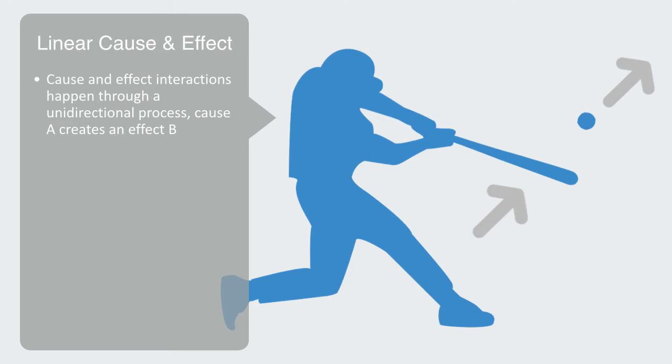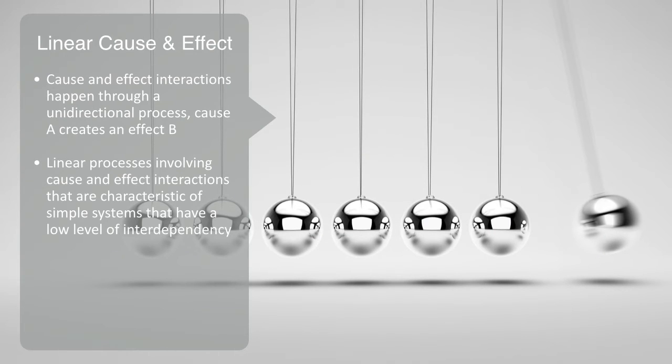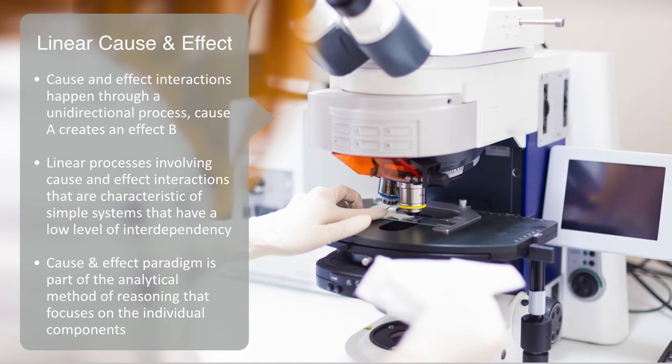These are linear processes involving cause and effect interactions that are characteristic of simple systems that have a low level of interdependency. We typically tend to think of things as chains of cause and effect and often ignore the time delays between them and how a change in one component will possibly feed back to affect another. This linear cause and effect paradigm is part of the analytical method of reasoning that is focused on the individual components in a system and uses linear equations to describe how they interact in a well-defined manner.